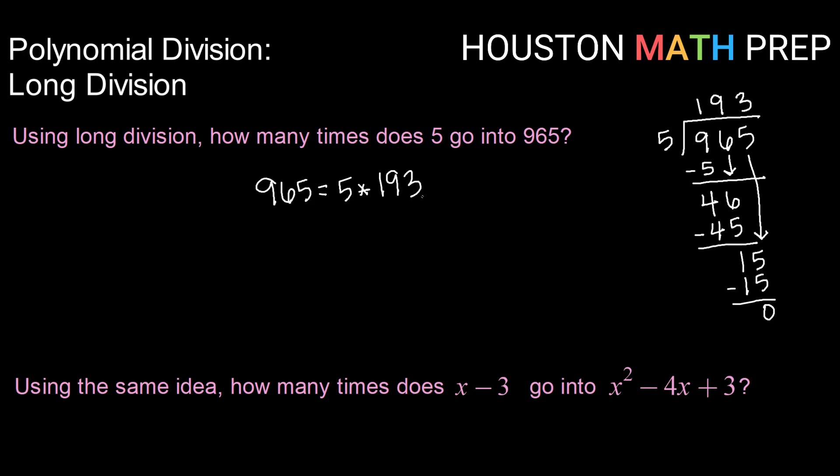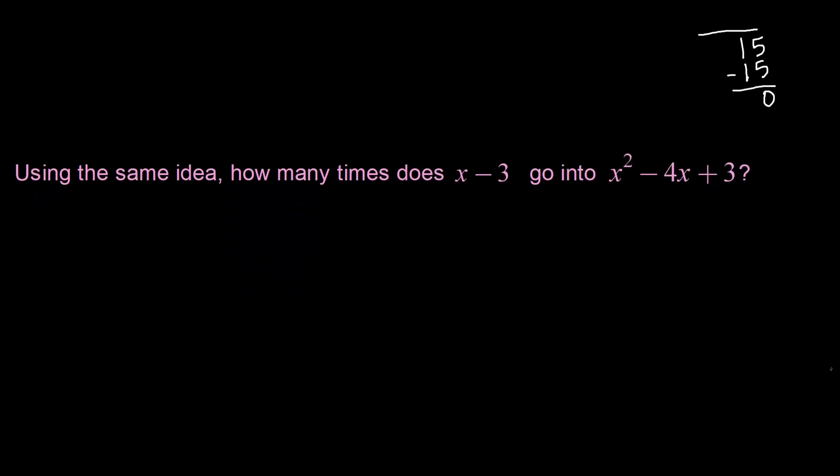Now that's numerical long division, but polynomial long division follows a very similar pattern. So let's take that same idea and answer the question, how many times does x minus 3 go into x squared minus 4x plus 3? Setting up a very similar look, I'm going to take x squared minus 4x plus 3, place that under our division bar, and then take our divisor x minus 3 and place it outside.